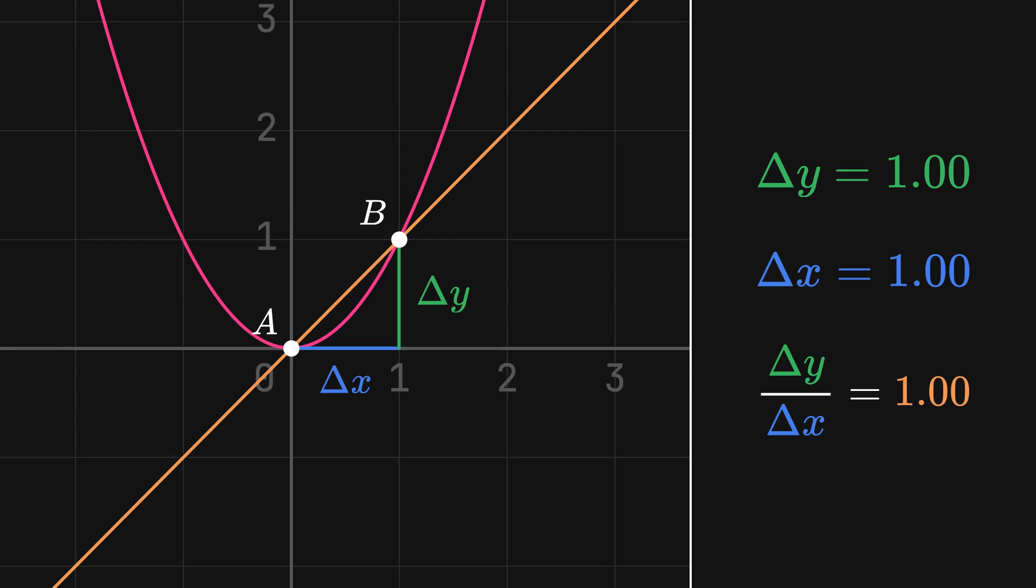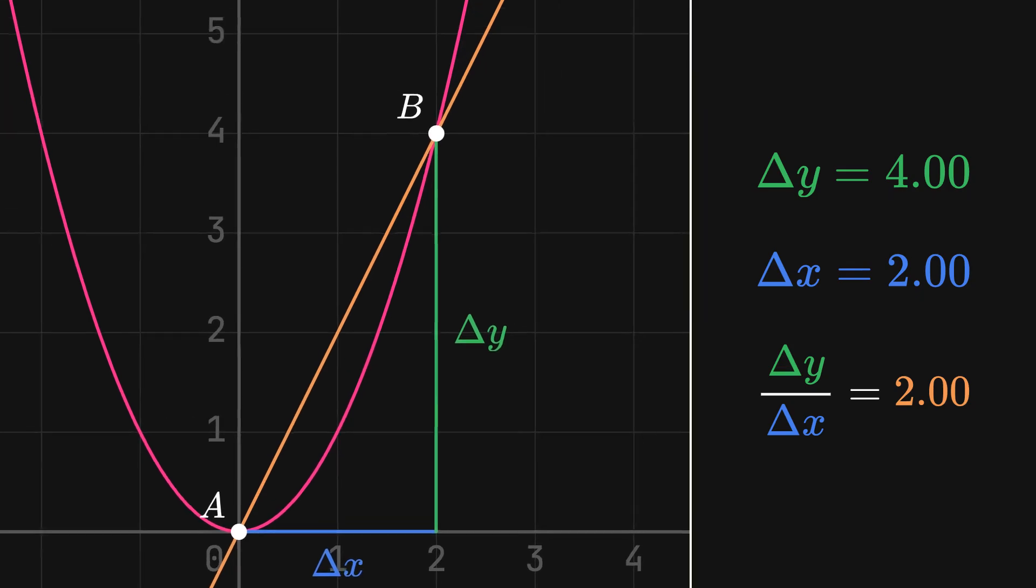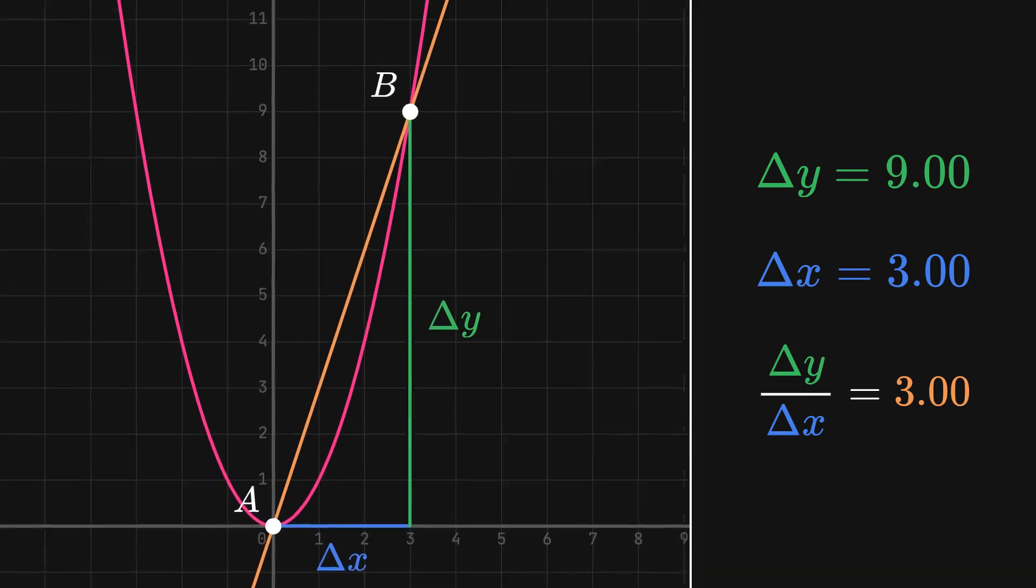When we move point B to the right, the ratio of delta y and delta x gets bigger, so the slope between the two points gets steeper. Slope gets steeper and steeper the farther we move point B to the right.